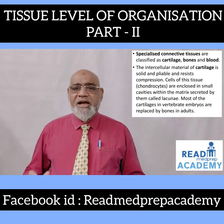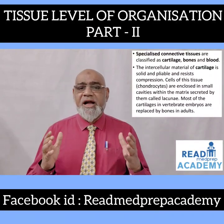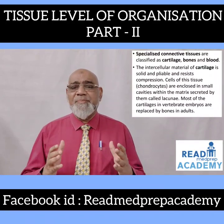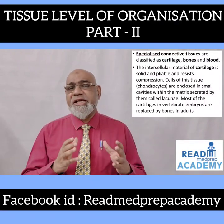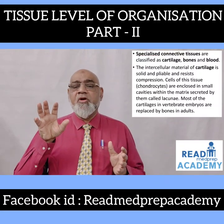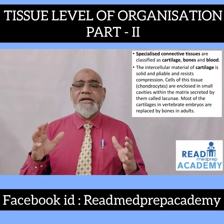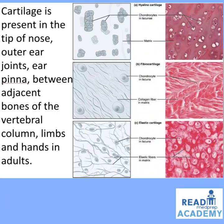Specialized connective tissues are classified as cartilage, bones, and blood. The intercellular material of cartilage is solid and pliable and resists compression. Cells called chondrocytes are enclosed in small cavities within the matrix called lacunae. Most cartilages in vertebrate embryos are replaced by bones in adults. Cartilage is present in the tip of the nose, outer ear joints, ear pinna, between adjacent bones of the vertebral column, and in limbs and hands.